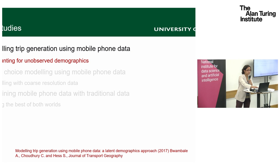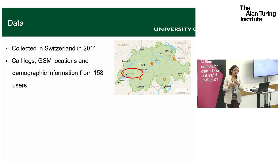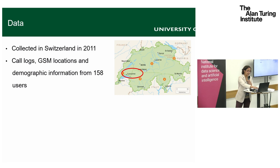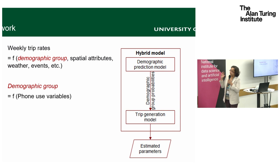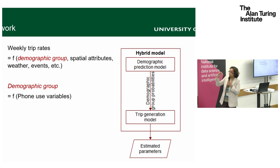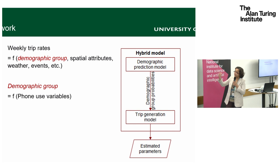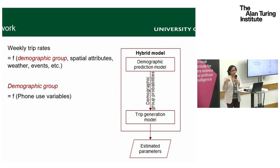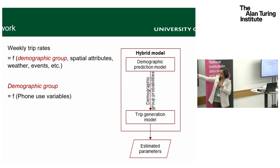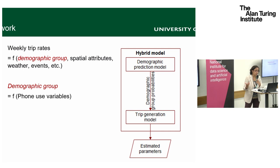The first case study uses data from Switzerland, from the Nokia Data Challenge in 2011, where we had call logs, GSM location data, and demographic information from 158 users who consented to share it. Our framework was to model weekly trip rates, which are typically modeled as a function of sociodemographic characteristics, spatial attributes, weather, and events. The challenge was that while we knew demographics for a subsample, we did not have them for the larger dataset, so we developed a two-stage model with a component to predict the demographic group of users.